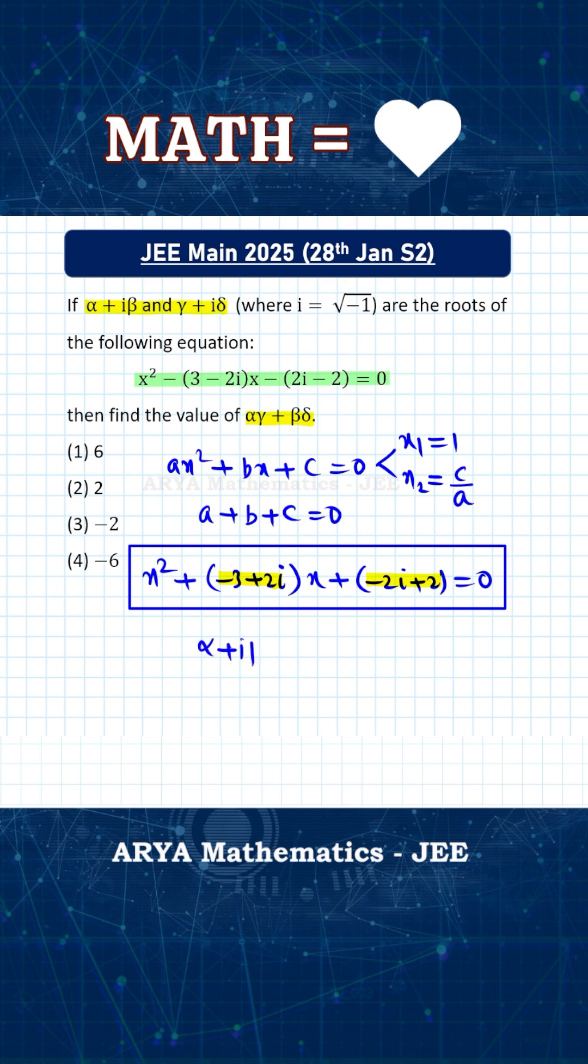Let us say alpha plus iota beta, this is 1. We can write as 1 plus 0 iota, and the other root must be c by a, that is constant term by coefficient of x square. The other root is gamma plus iota delta, so this must be 2 minus 2 iota.